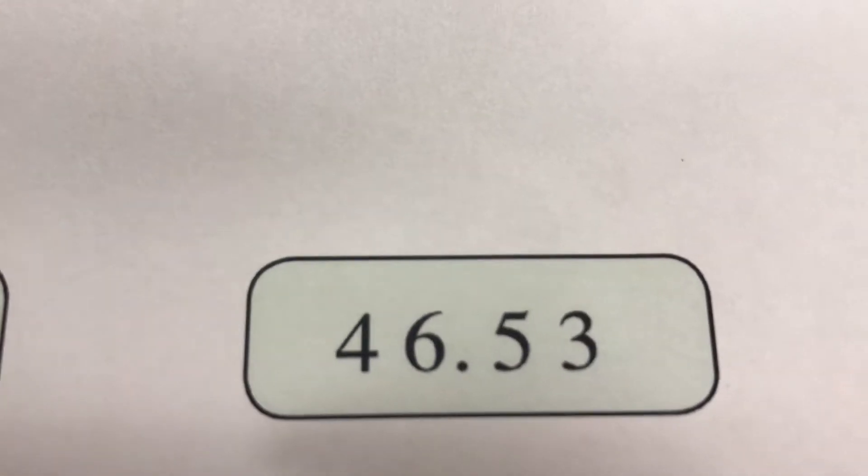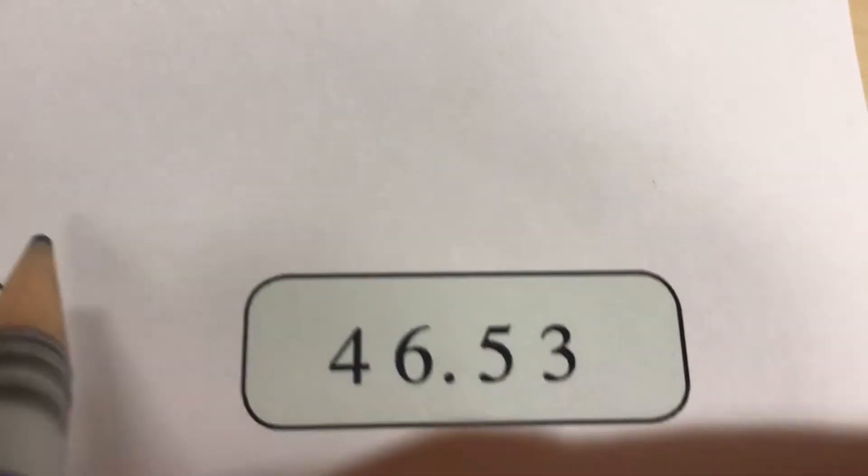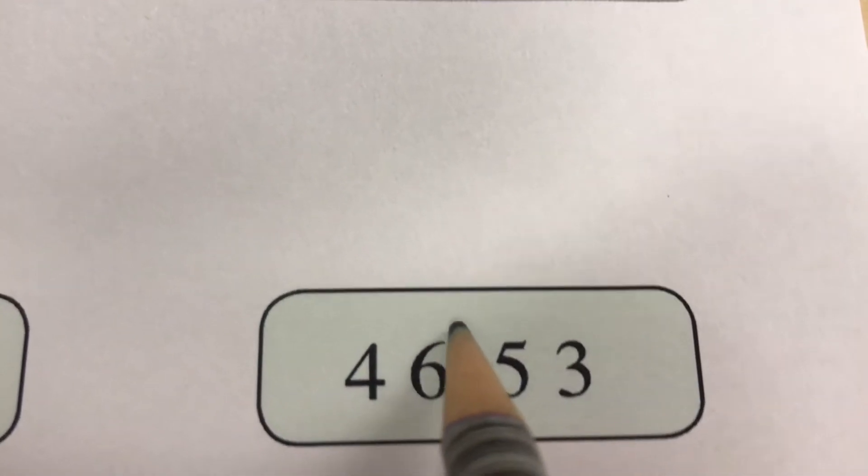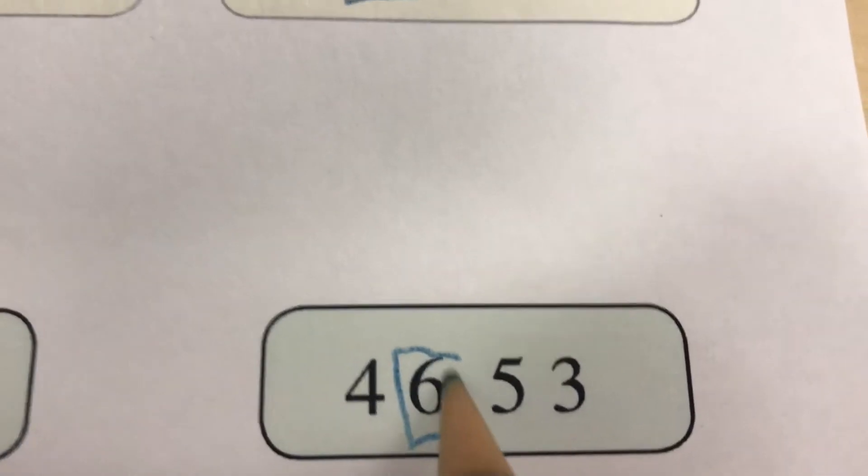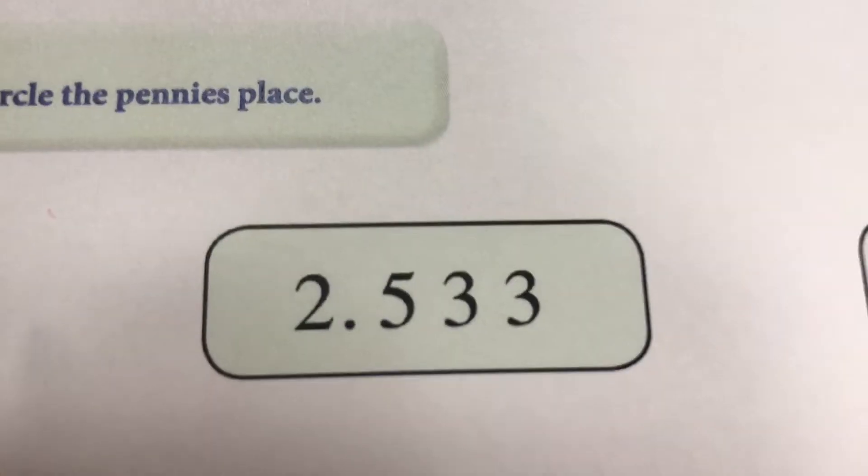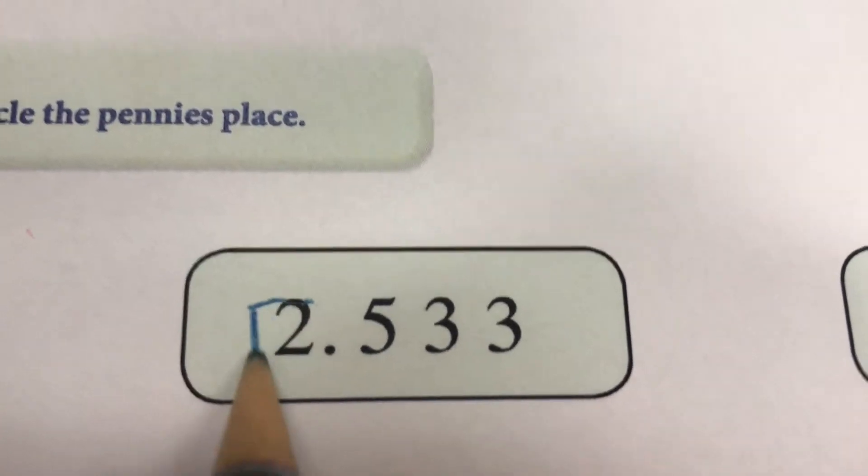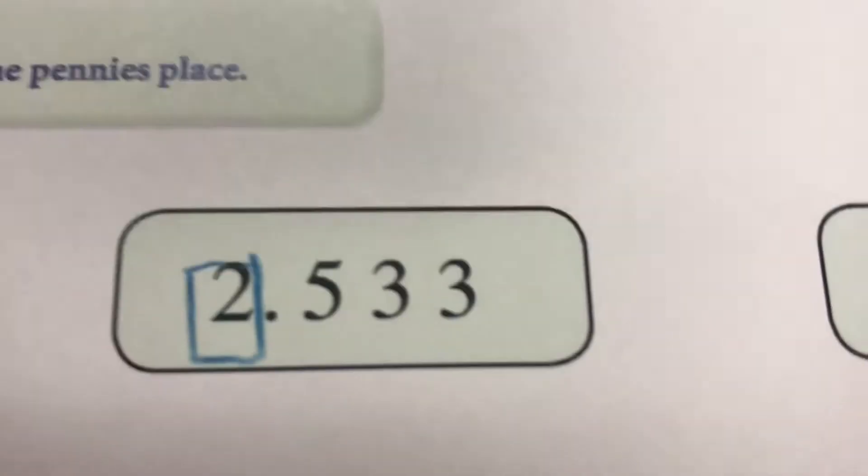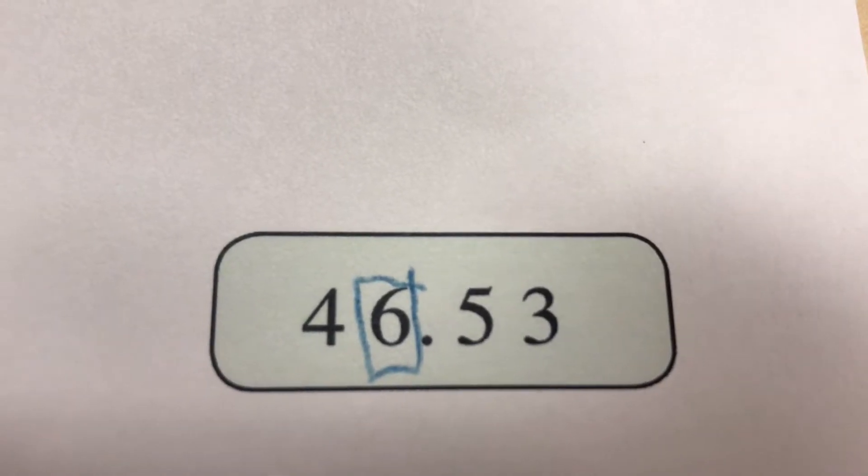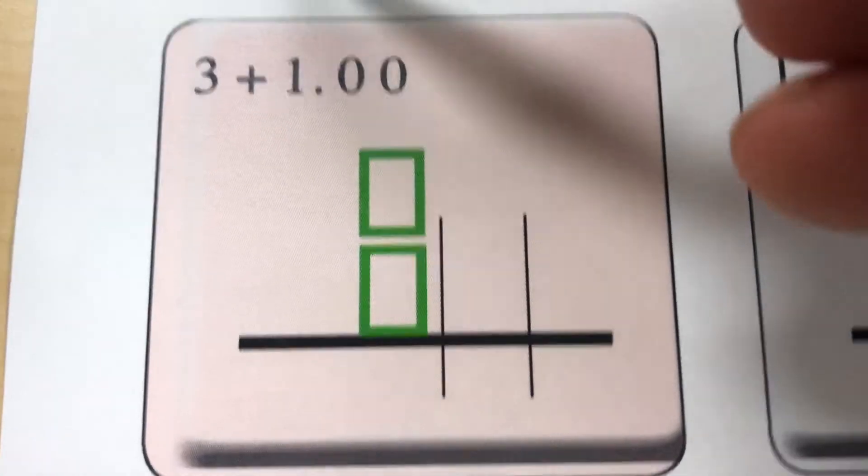As you look down at another number, like perhaps $46.53, again find the one dollars place. Find the one dollars place here. If you're going to add that number and that number, you would add your dollars to your dollars. Consider setting up this problem.